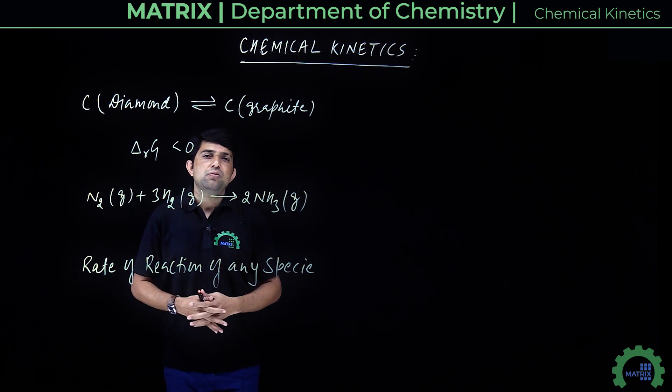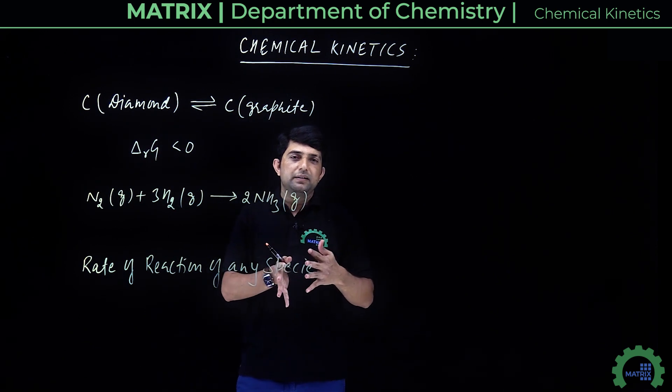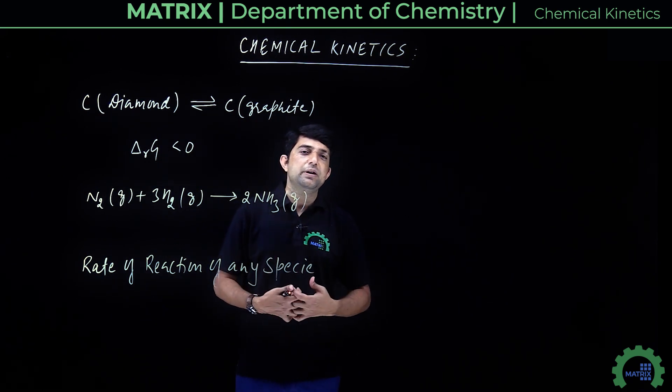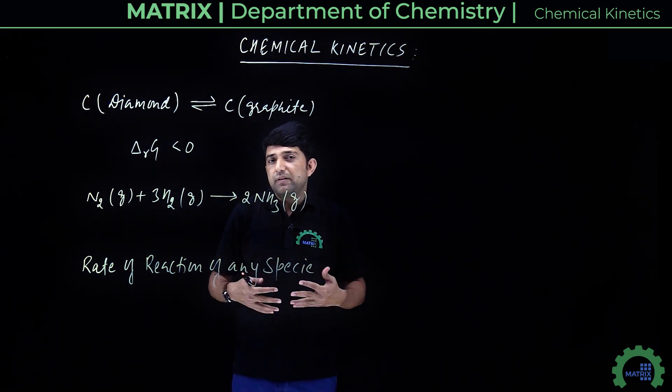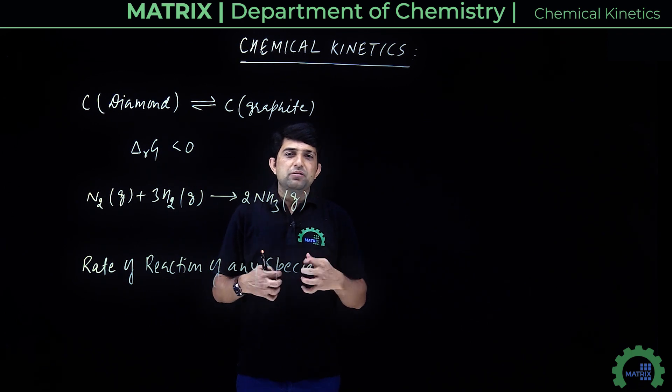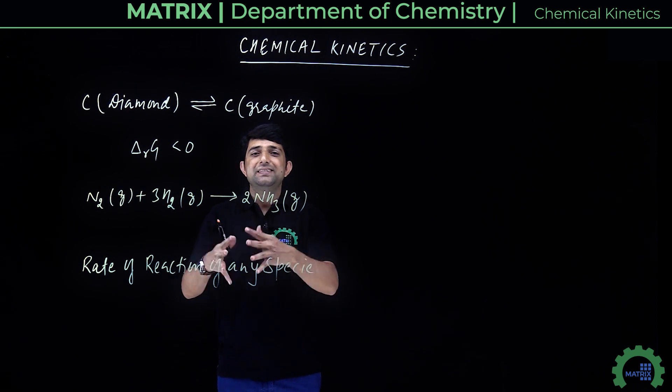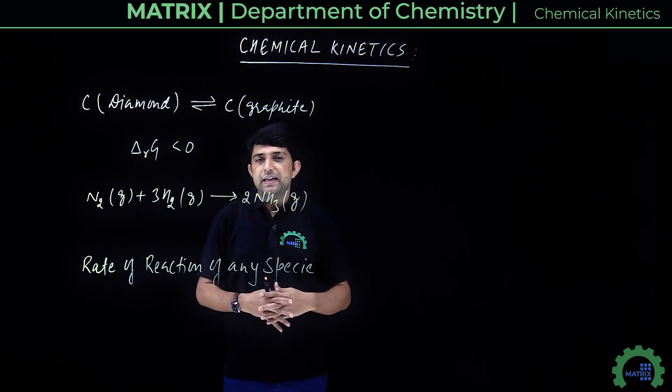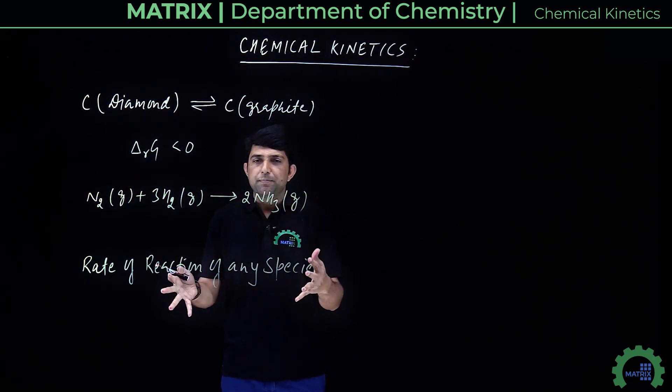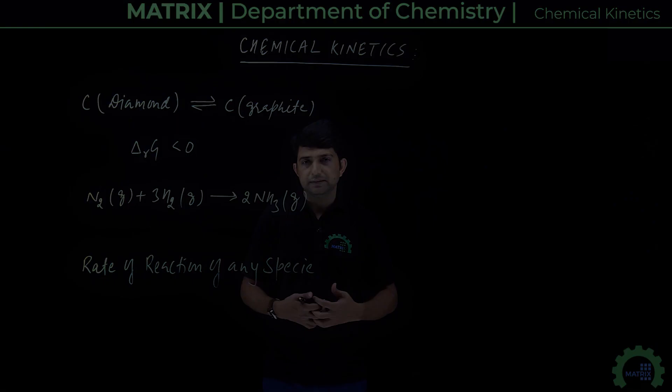Often we have requirements where a reaction is going very fast but we want it to be slow, or a reaction is very slow but we want it to be faster. If we know the certain factors that affect the reaction rate, then by modifying those factors we can control the rate of that reaction. In this chapter, we will learn which factors affect the rate of any reaction.